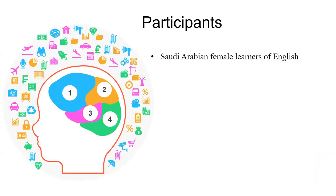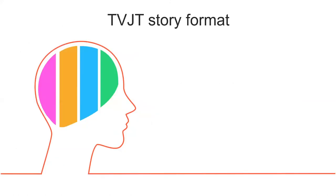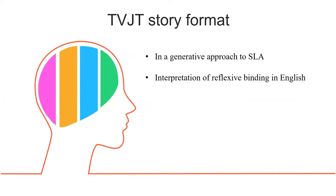The age of L2 school instruction was lowered from grade seven to grade six and then to grade four since the Ministry of Education implemented the ELDP program between 2004 and 2012. The study sample consisted of 24 Saudi Arabian female learners of English as a foreign language at college level. They started learning English at school within the same system of instruction but at different grade levels: grade four, grade six, or grade seven. Their average length of exposure to the target language amounts to 866 hours of formal instruction, a minimal input context. They took a paper-based truth value judgment task in story format to test their interpretation of reflexive binding — a property of language not explicitly taught at schools.